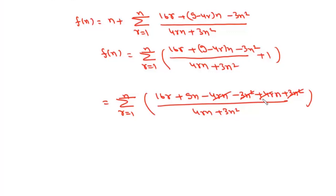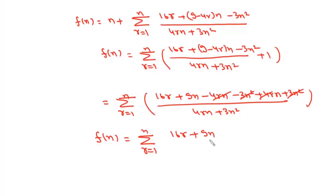After cancellation, 3n² will cancel and 4rn will also cancel. So we get f(n) as the summation where r varies from 1 to n of (16r plus 9n) upon (4rn plus 3n²).